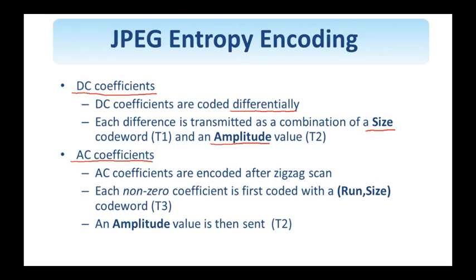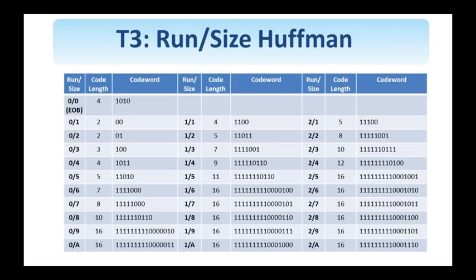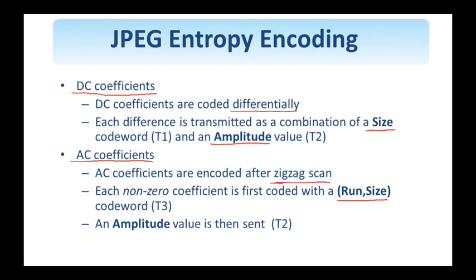When it comes to the encoding of the AC coefficients, they're first zigzag scanned, as was explained in the previous slide. Then, each non-zero coefficient is first coded as run followed by size. There is yet another table, table 3, that provides the Huffman codes for this combination of runs of zeros followed by size. Here is a run of zero zeros followed by size 2. The length of this code is 2, and this is the actual codeword. Then, based on this size here, part of this codeword, we go back to table 2 and encode the amplitude value.